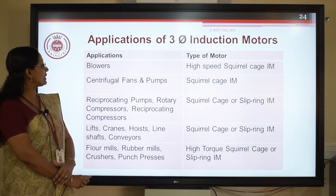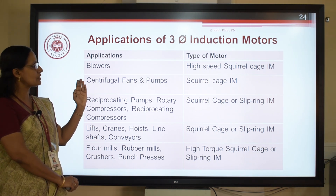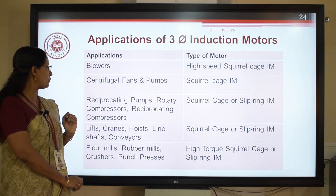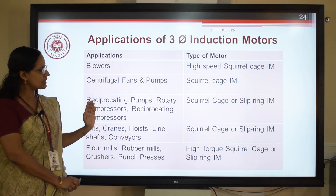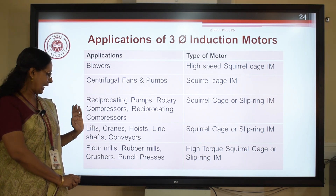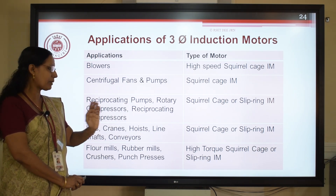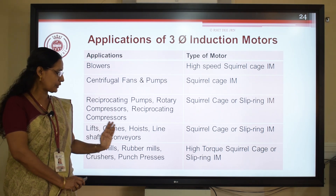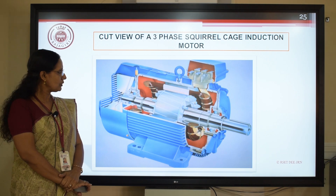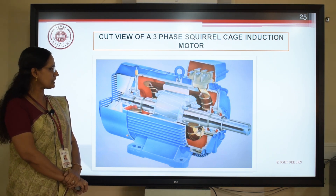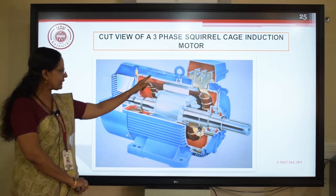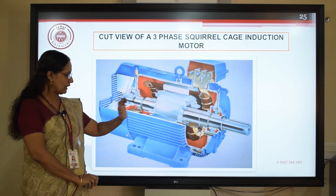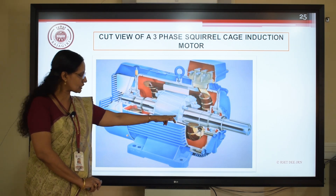Based on application, for blowers we go for high-speed squirrel cage induction motor; for centrifugal pumps and fans, generally squirrel cage induction motor; for reciprocating pumps, rotary compressors, reciprocating compressors, either squirrel cage or slip ring; for lifts, cranes, hoists, generally slip ring but squirrel cage can also be used; for flour mills, rubber mills, crushers, and punch presses, high-torque squirrel cage or slip ring. In the cut view of the squirrel cage induction motor, you can see the frame, foot, lifting eye, stator core with three-phase winding, terminal box, rotor, rotor shaft, rotor core with rotor bars short-circuited with end rings, and ball bearings.